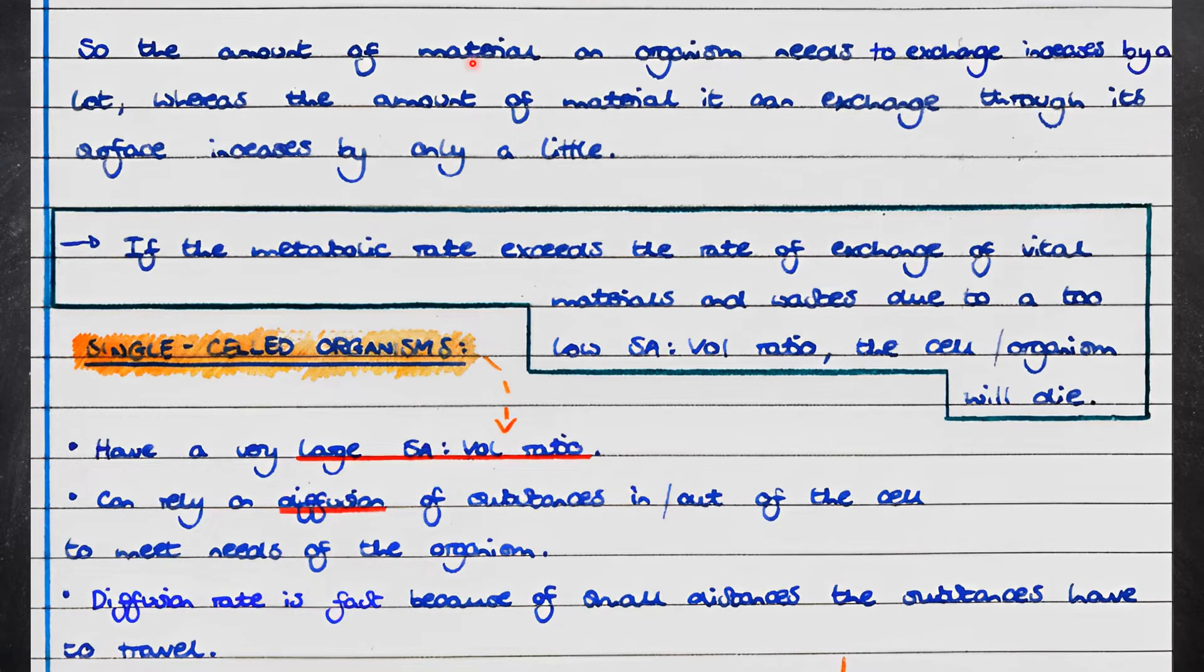As the size of an organism increases, the amount of material the organism needs to exchange increases by a lot, whereas the amount of material it is able to exchange through its surface only increases by a little.